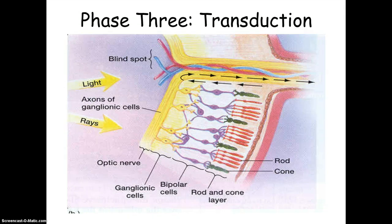And remember, rods detect black, white, and gray. These are necessary for peripheral vision and twilight vision. And they're very sensitive to a faint amount of light. This is why you can see fairly well with very limited light.